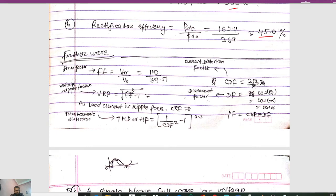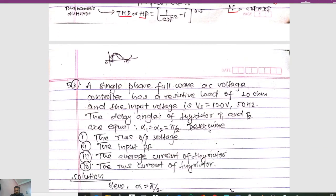Further performance parameters: Form factor FF = V1/V0; Current Distortion Factor CDF = 2√2/π; Voltage Ripple Factor VRF = √(FF² − 1); Displacement Factor DF = cos(theta1) = cos(alpha); Total Harmonic Distortion THD = √(1/CDF² − 1); and Power Factor PF = CDF × DF.